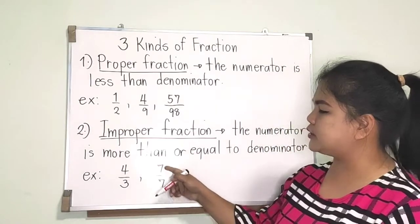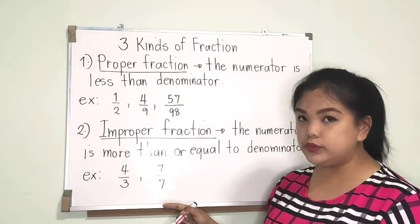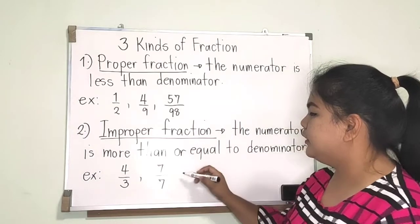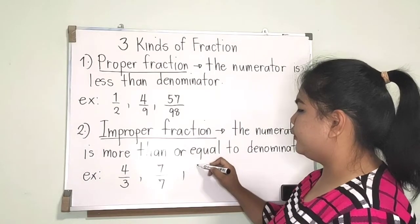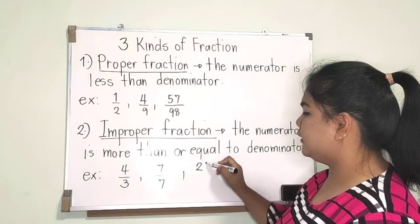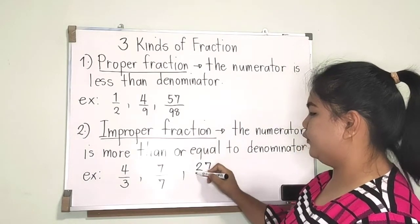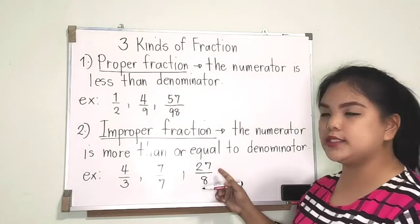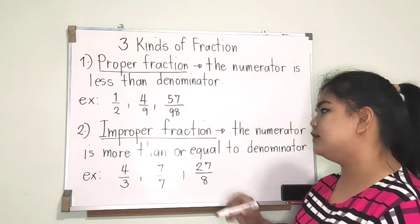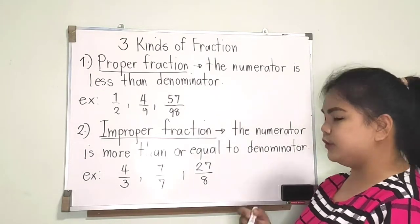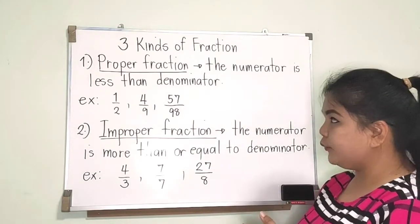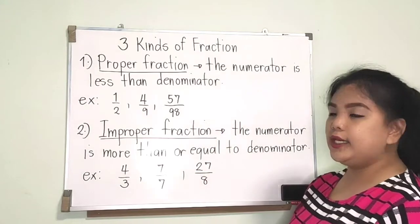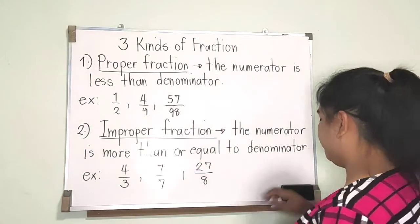Actually, that case has its own name which I'll talk about later. Another example of an improper fraction is twenty-seven over eight. So we have proper fraction and improper fraction.